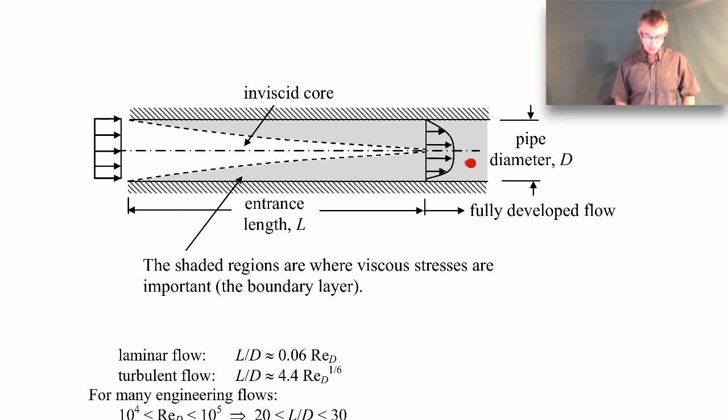So we can't use Bernoulli's equation as you've been dealing with it once we have this fully developed flow because it's all viscous. And we know that Bernoulli's equation is only valid for inviscid flows. So we could use Bernoulli's equation from the inlet here all throughout the inviscid core, but once the boundary layers merge, then we can't use it anymore.